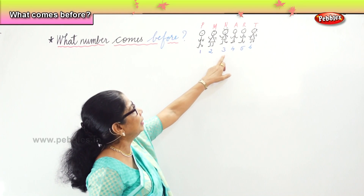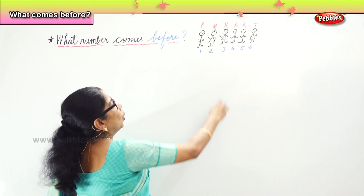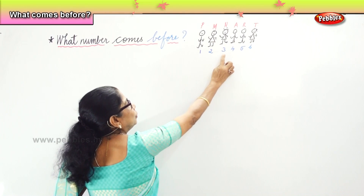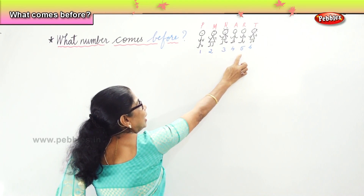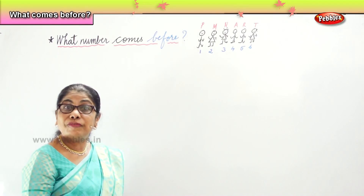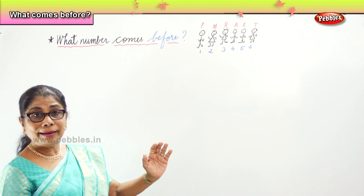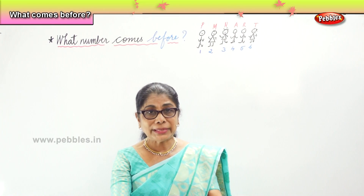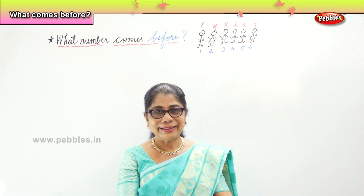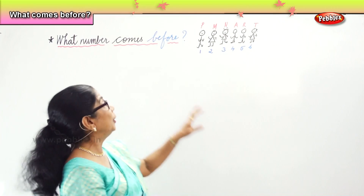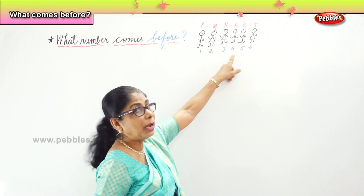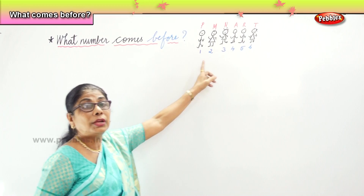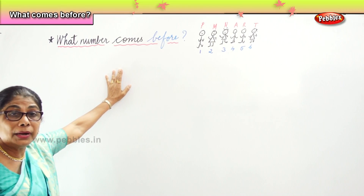What number comes after 3? 4. Now I am asking before — what number is coming before 3? 2. Before 6? 5. Before 3? 2. Before 5? 4. Before 2? 1. They are all standing in a line. What is before me? Nobody is there — nothing is there. We are doing what number comes before. Before 4? 3. Before 6? 5. Before 2? — that's what we are going to do with numbers.